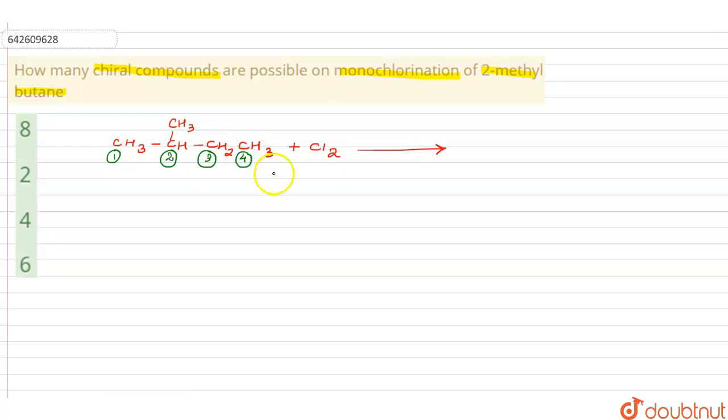So these would be 4 different products which we would be getting. Let me show you what would be the structures. The very first one is going to be CH2Cl, CH, CH3 and CH2, CH3. This is compound number 1.